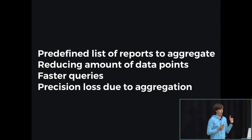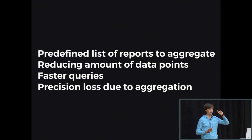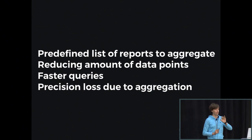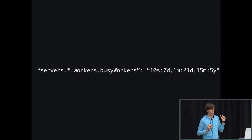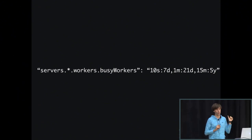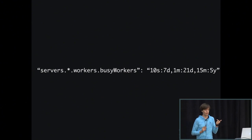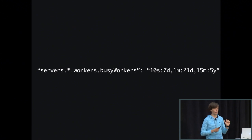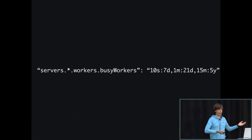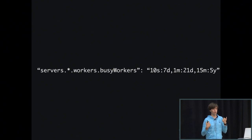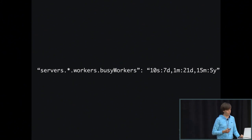For every aggregate, you have to think in advance and decide what you'd like to calculate. For example, you could have a certain workers metric where 10-second rollups are stored for seven days only, one-minute rollups stored for 21 days, and 15-minute rollups stored for five years. Obviously the further you go in time, the less granular data you get. You sacrifice precision for space, and in the majority of cases that works out well.